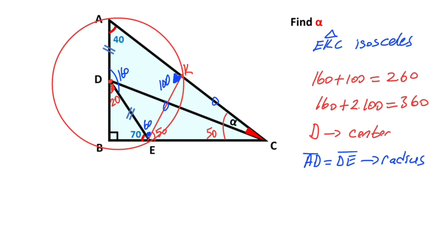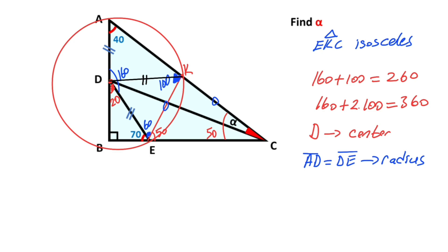After that, if we connect point D and point K like this, this length is also a radius. These are also radii. And then if you focus on this triangle...